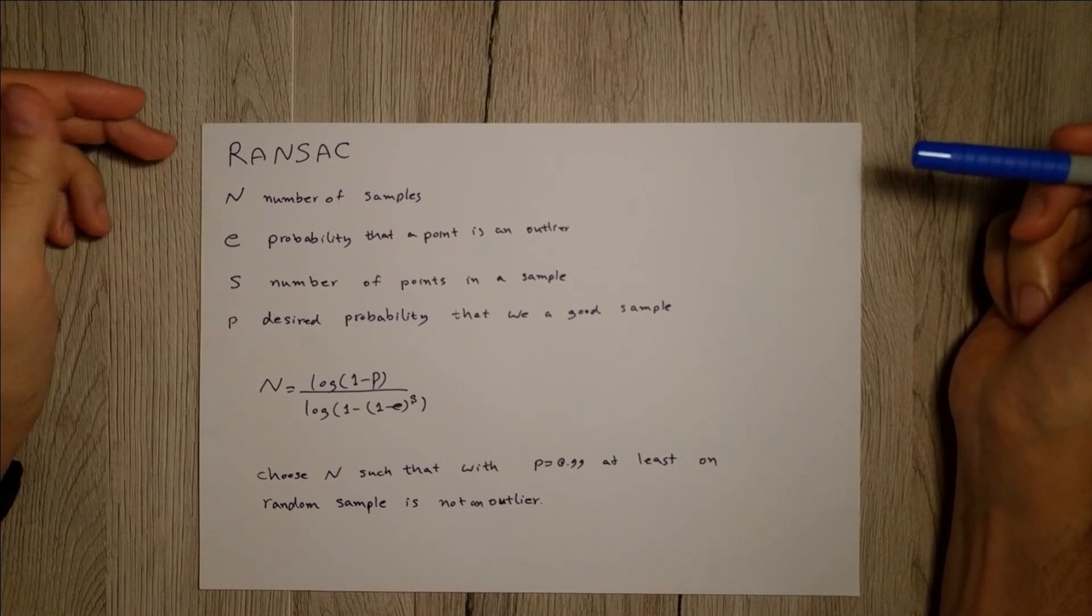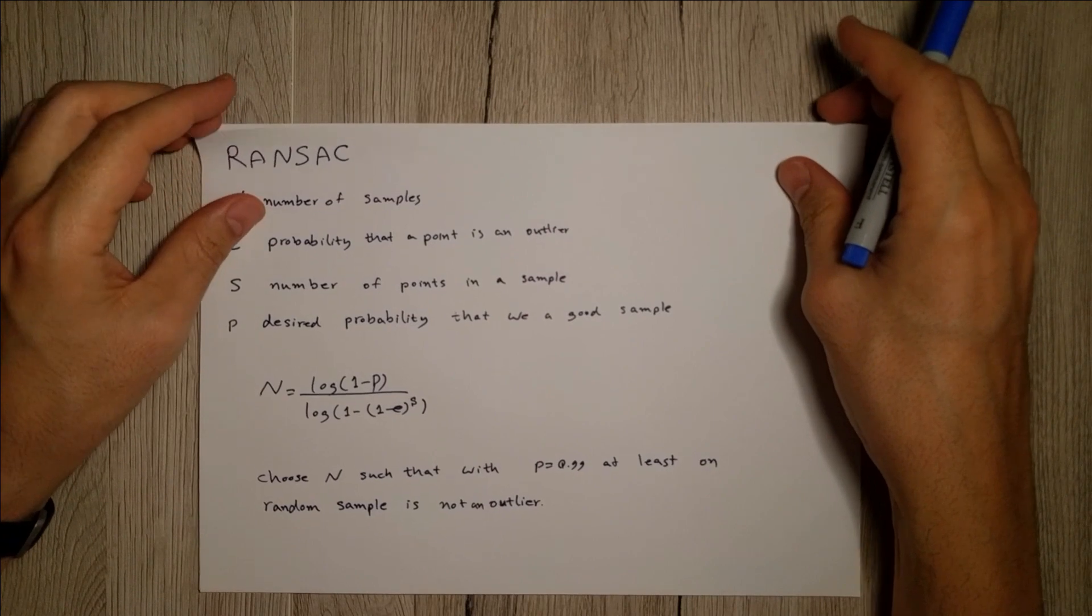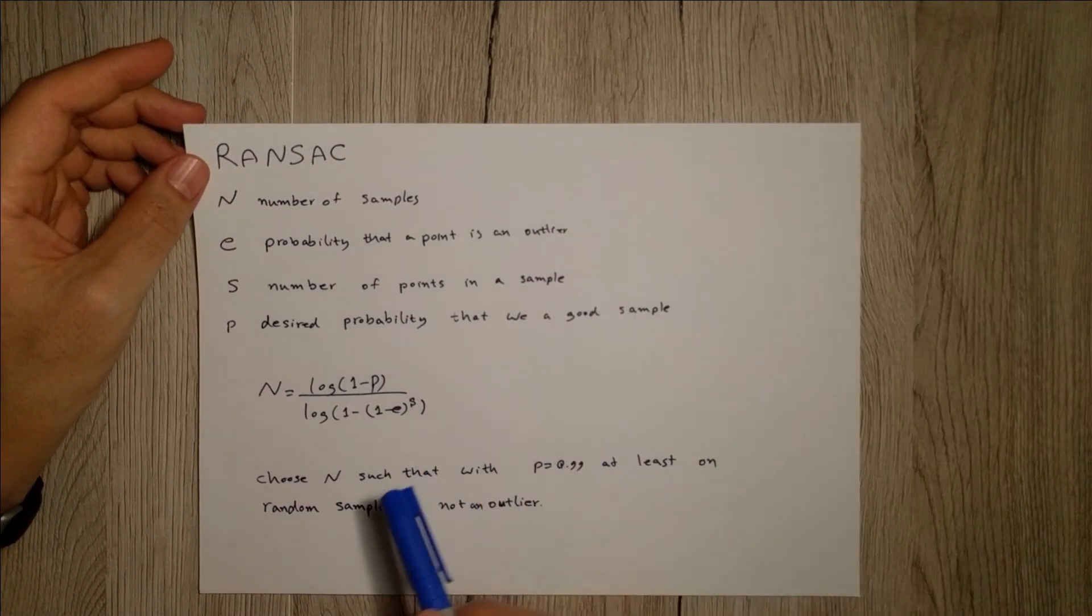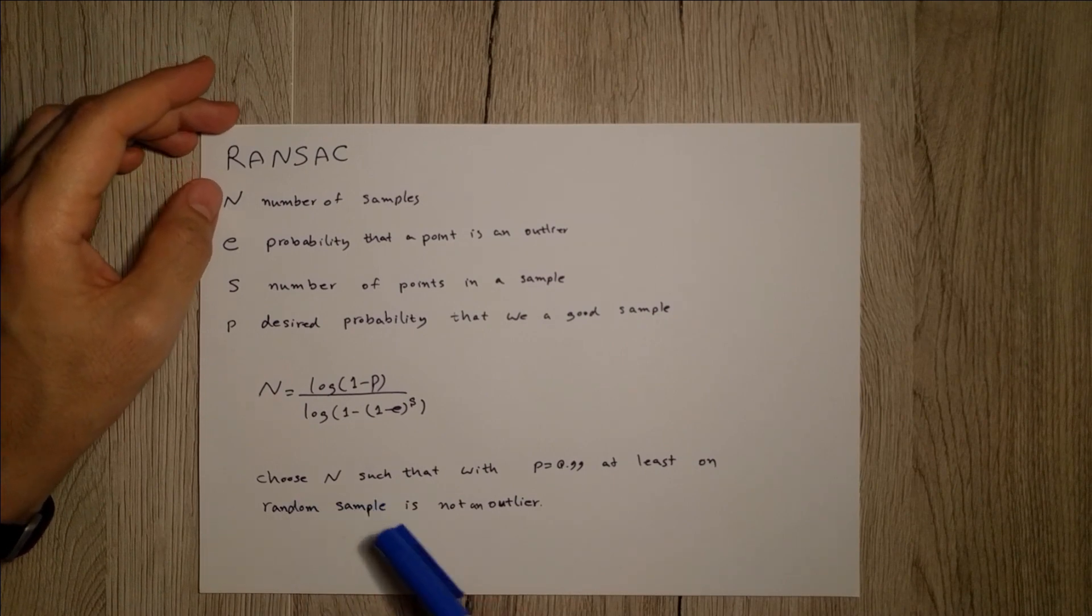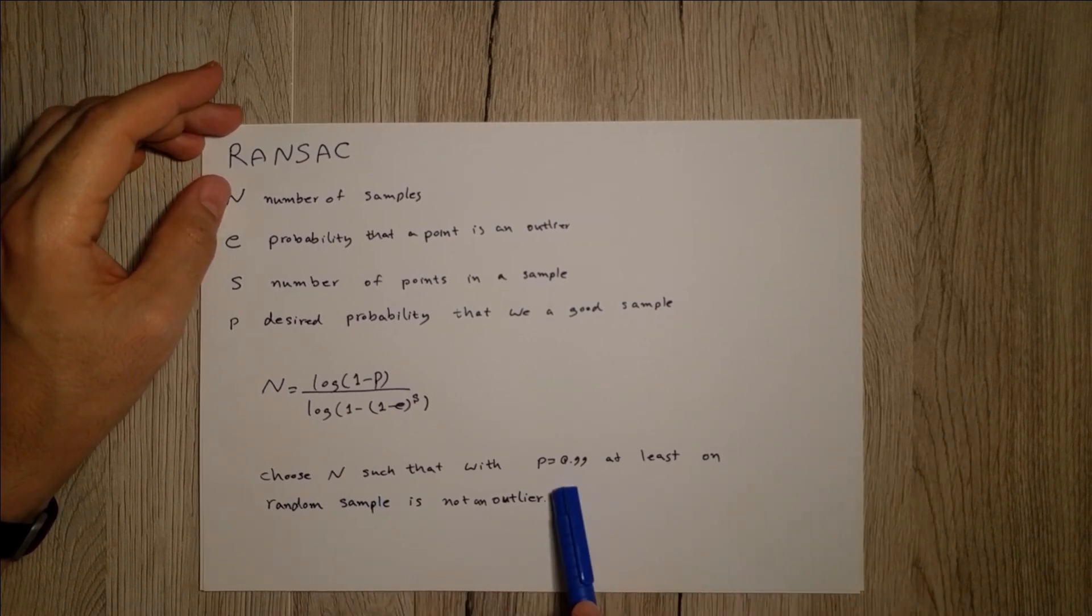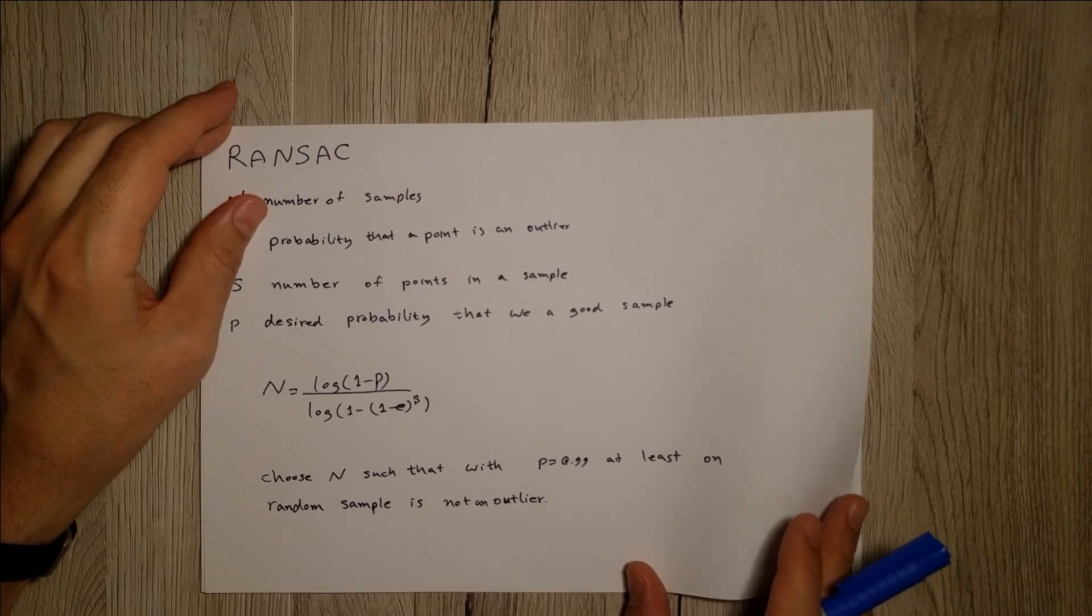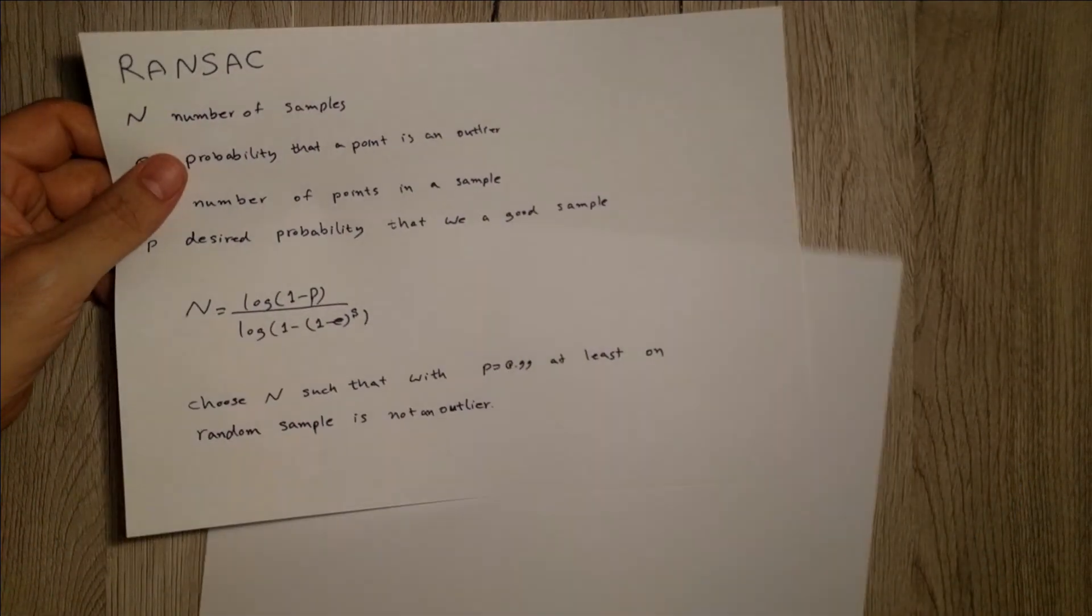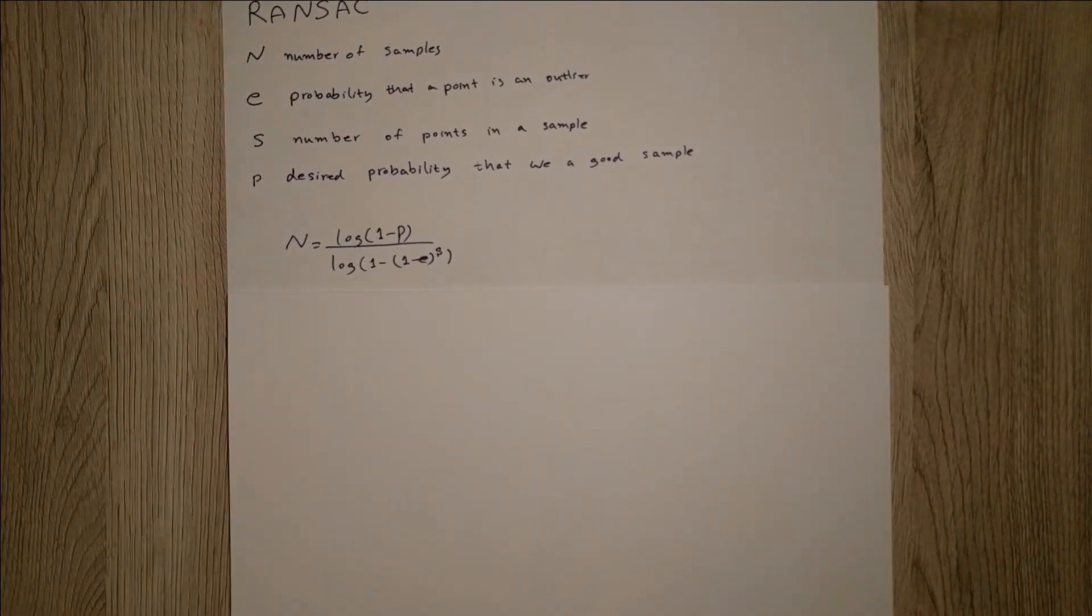And P, as I said, is the desired probability that we have a good sample. We usually try to find such an N such that with the probability of 99 percent we have at least one inlier in our data. Okay, let me just write down where this term comes from.